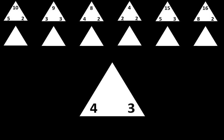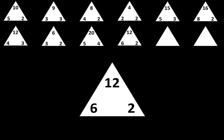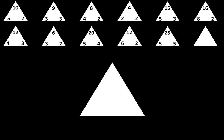The next one is 4 times 3 is equal to 12. The next one is 3 times 2 is equal to 6. The next one is 5 times 4 is equal to 20. The next one is 6 times 2 is equal to 12. The next one is 5 times 5 is equal to 25. The next one is 7 times 2 is equal to 14.